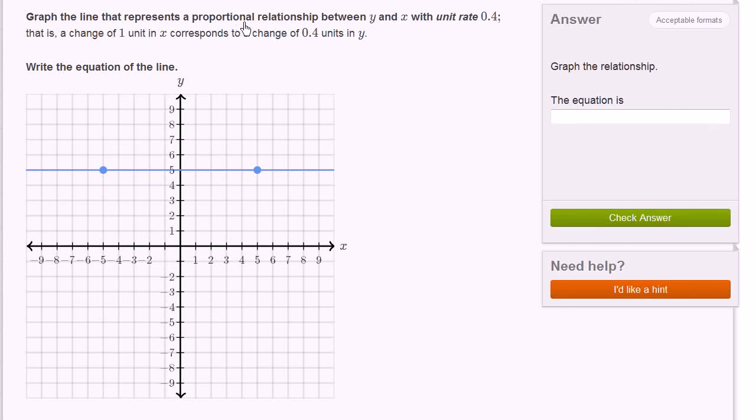Graph the line that represents a proportional relationship between y and x with a unit rate 0.4. That is, a change of one unit in x corresponds to a change of 0.4 units in y. And they also ask us to figure out what the equation of this line actually is.